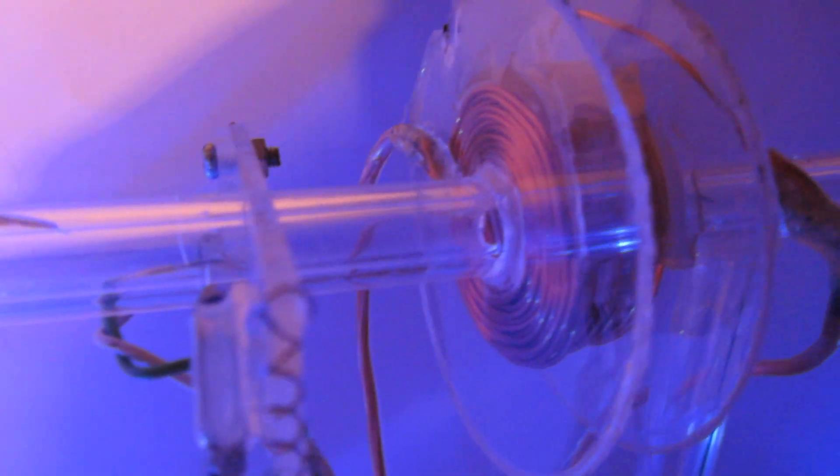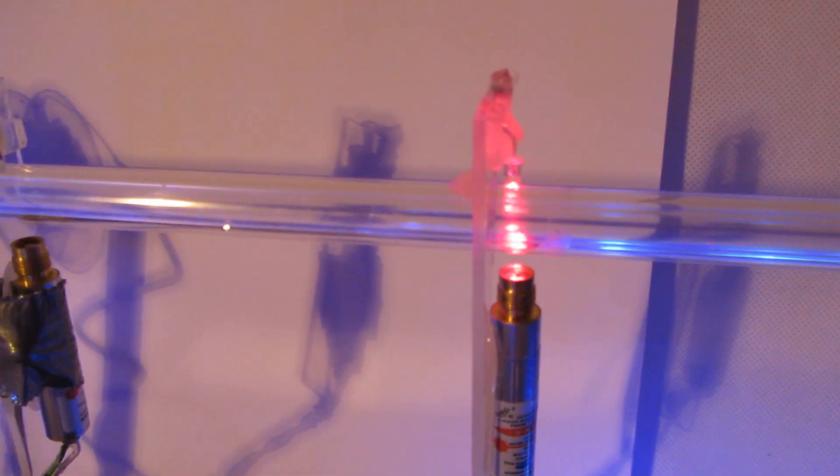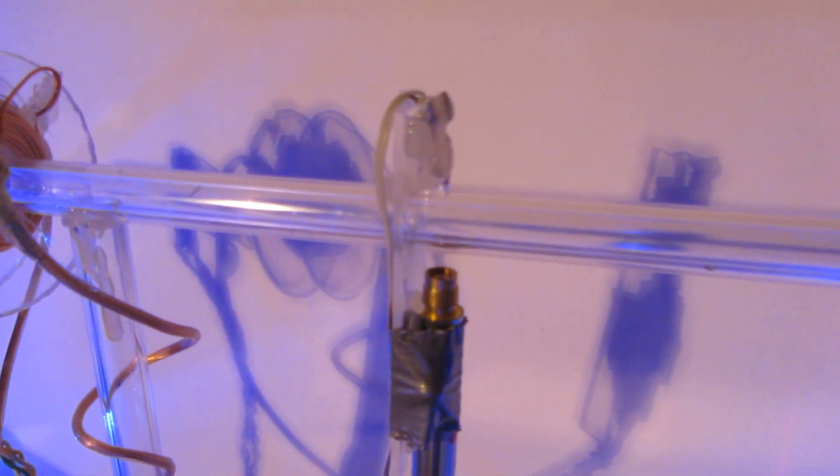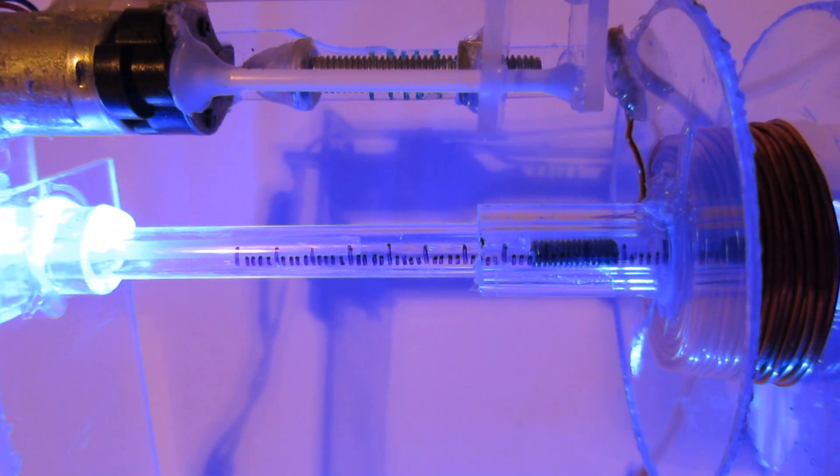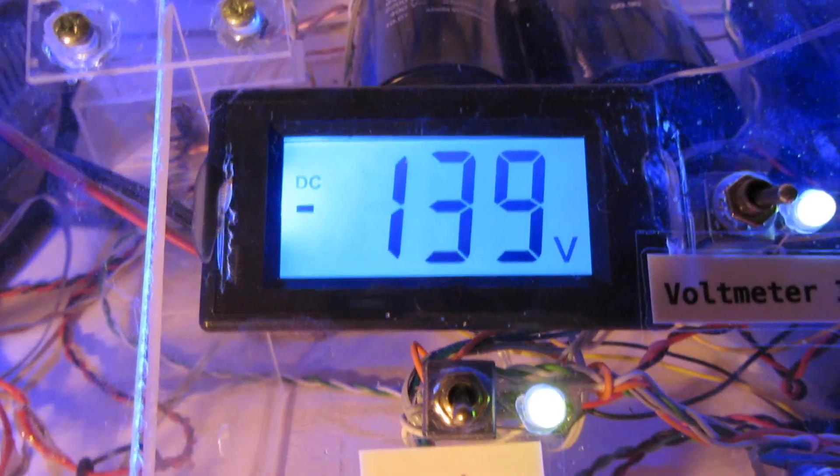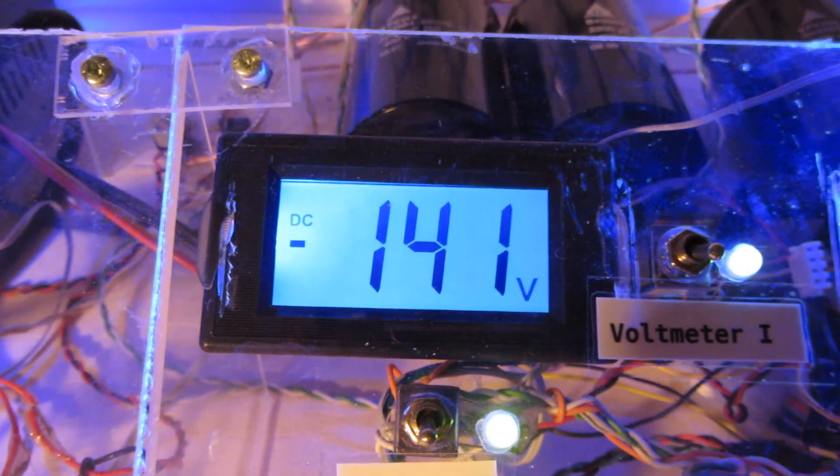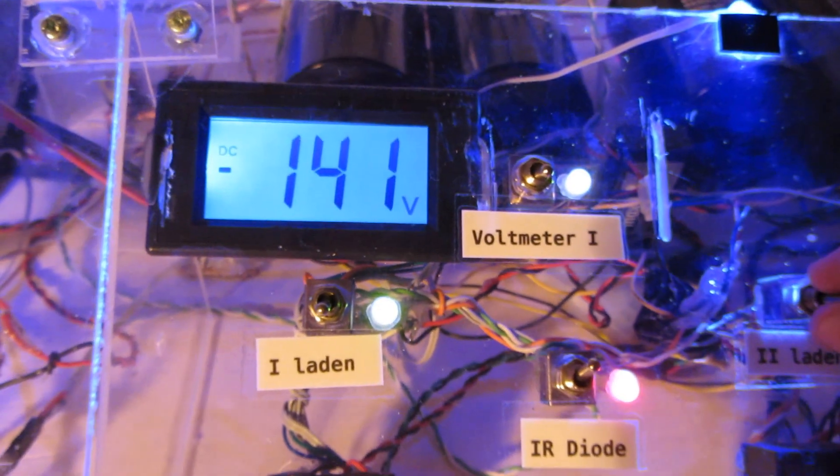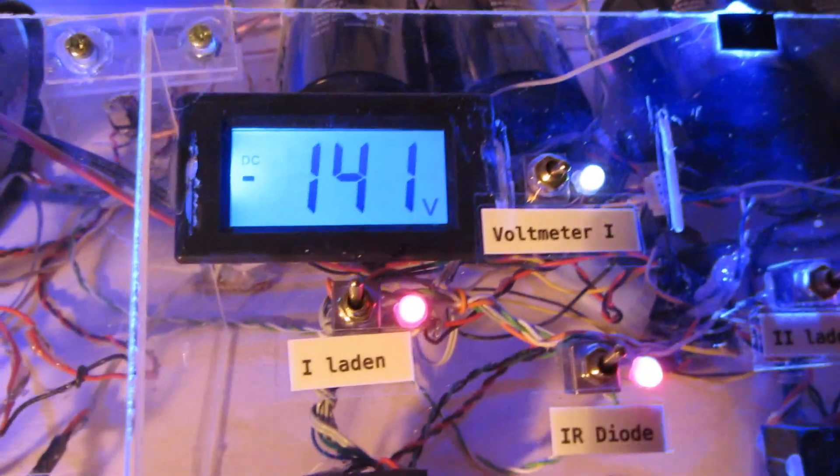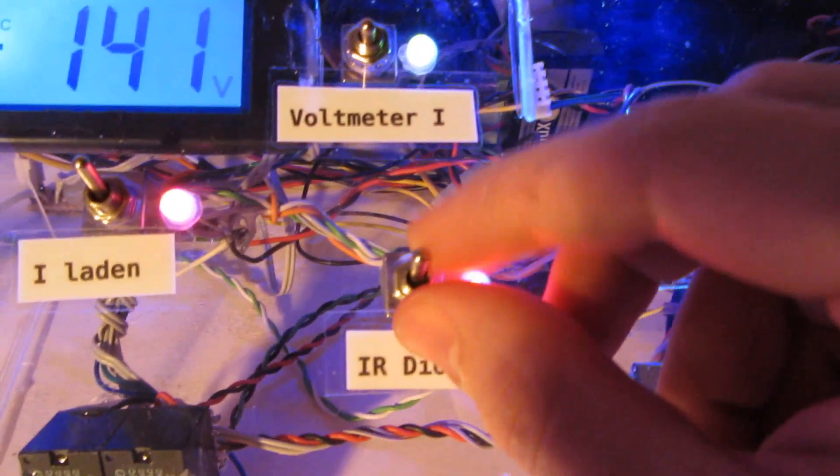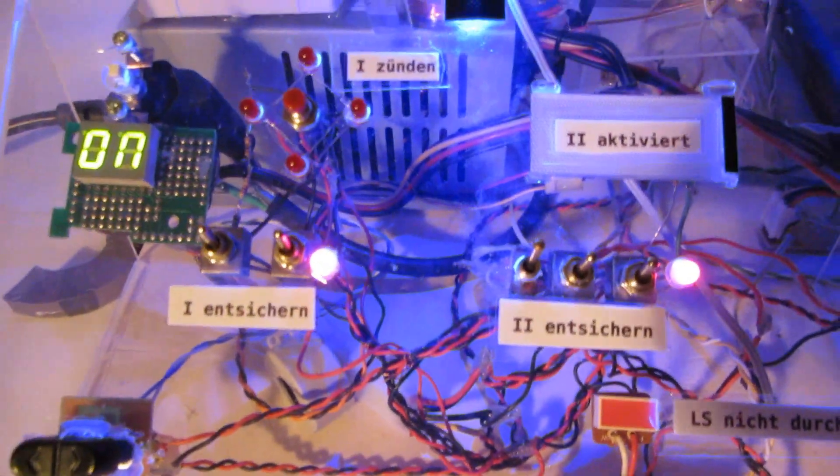Okay, now that's enough. Let's disengage the charging circuit, which is very important. Now let's activate the light barrier from the second stage and we're ready to fire.